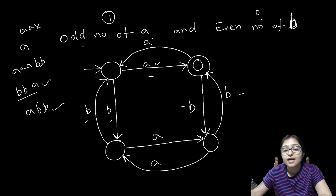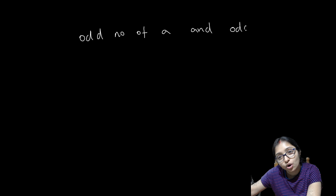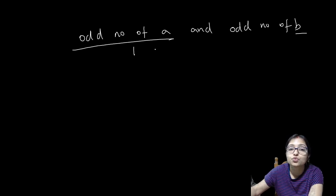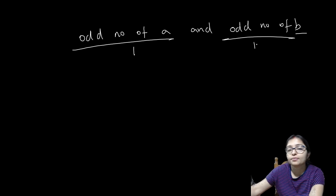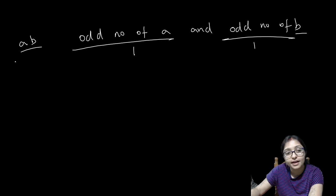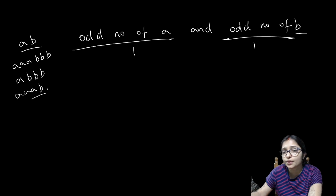Next last one: odd number of A and odd number of B. The minimum string is at least one A and at least one B, meaning AB is the minimum string. After that it can be AAABBB, or ABBB, or AAAB, like this way.